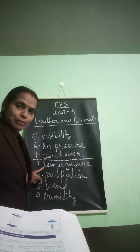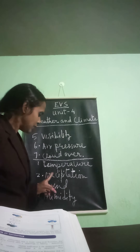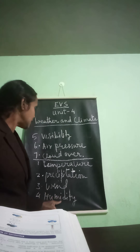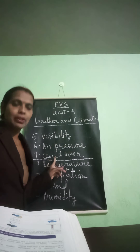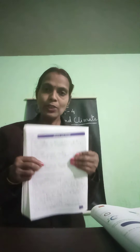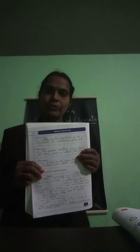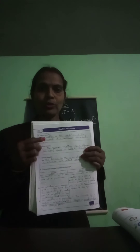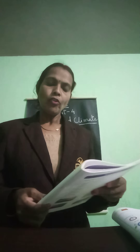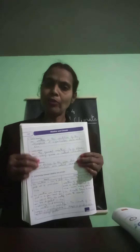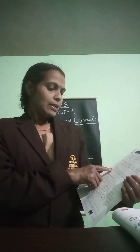So, what are the elements of weather? Temperature, precipitation, wind, humidity, visibility, air pressure, cloud cover. Now take out your workbook — they have given questions. The first question is: define weather. Weather is the condition of the atmosphere at a particular place and time. Second: define climate. The general weather of a place for many years is called climate. Then: define seasons. The division of the year due to changes in weather is called seasons.